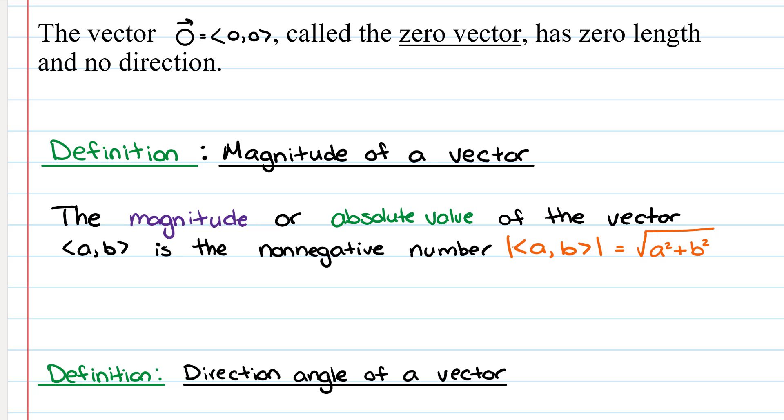The next thing I want to talk about is how to find the magnitude of a vector. So the magnitude or absolute value of the vector is a non-negative number, which you find by finding the square root of a squared plus b squared, which is essentially just the distance formula since you start at zero, zero.